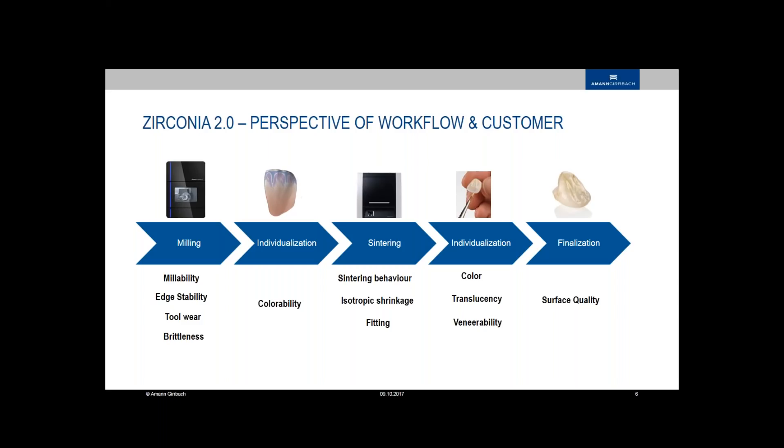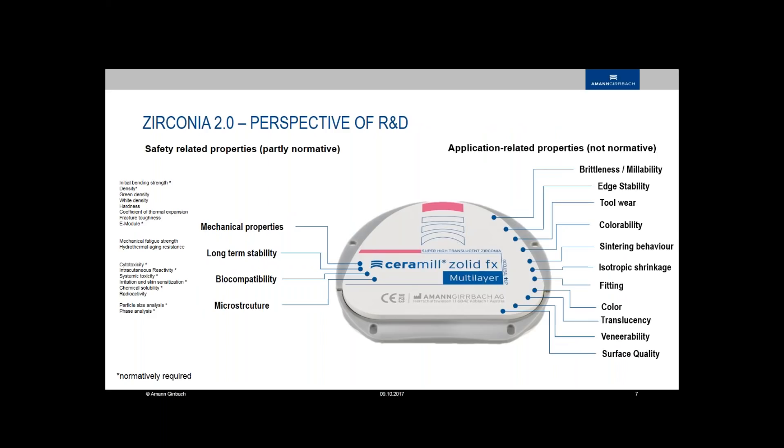This we ensure in our production already. When we go from milling to finalization we have a lot of steps where the blank itself has to be processed and has to work properly. A lot of other behaviors or other properties and features can be brought into a blank and we can take care about this. For example, the milling millability is very important, edge stability and the tool wear and brittleness. You don't want to have broken blanks in your machine. You want to have a blank that is very good and easy to be colored. It must sinter perfectly, it must have a nice translucency and the veneering must work properly. All this is done on our blank and tested from the beginning to the end.